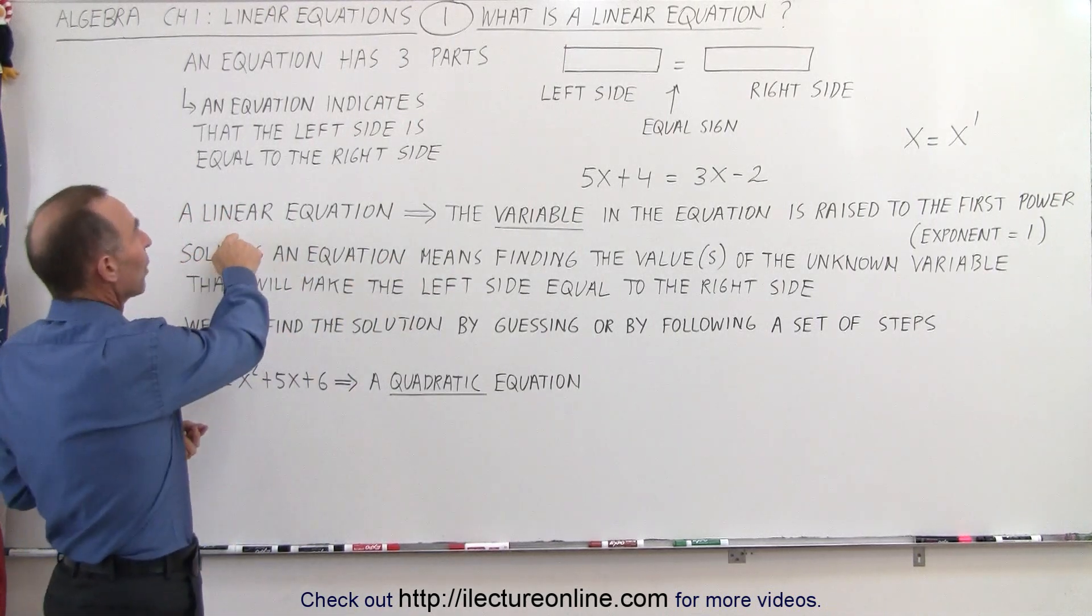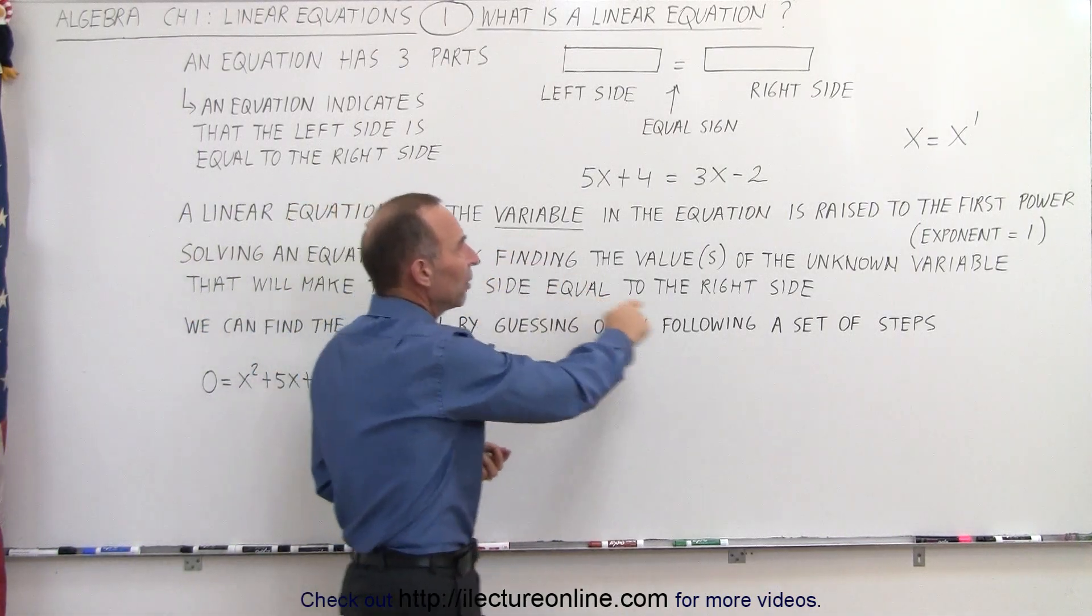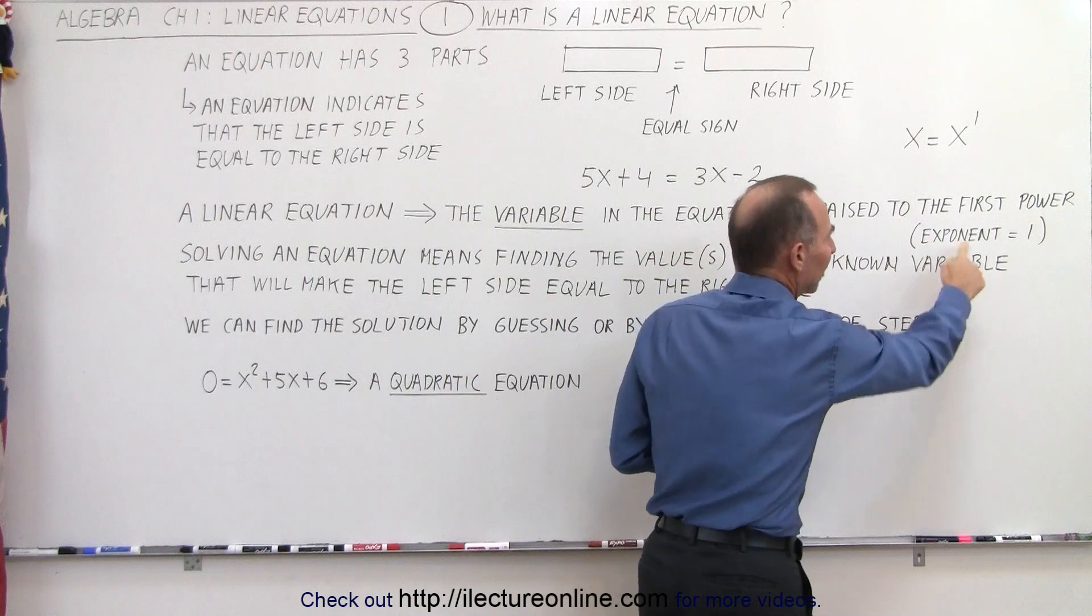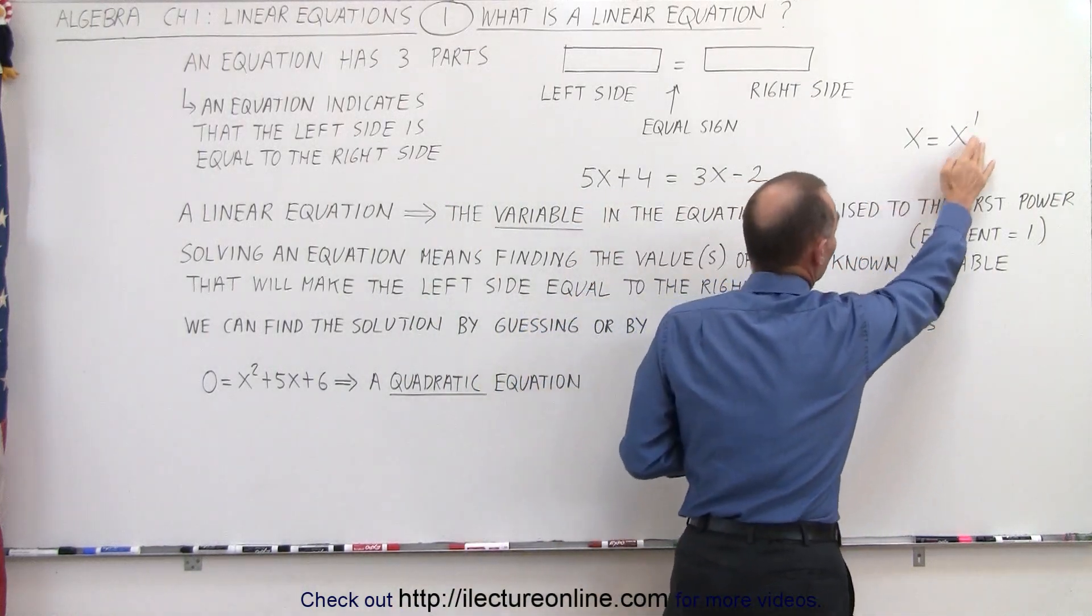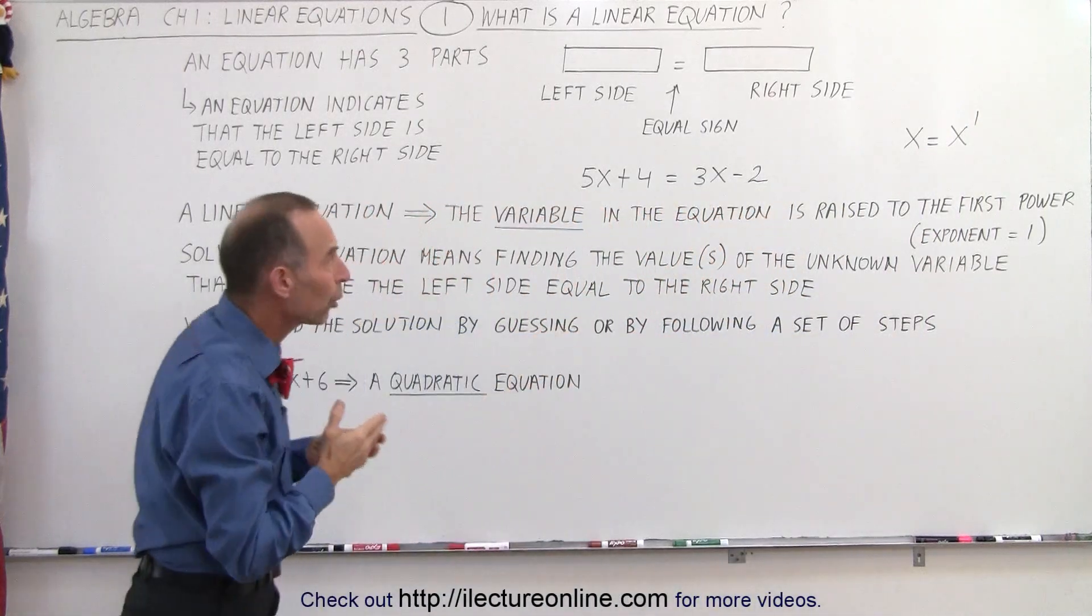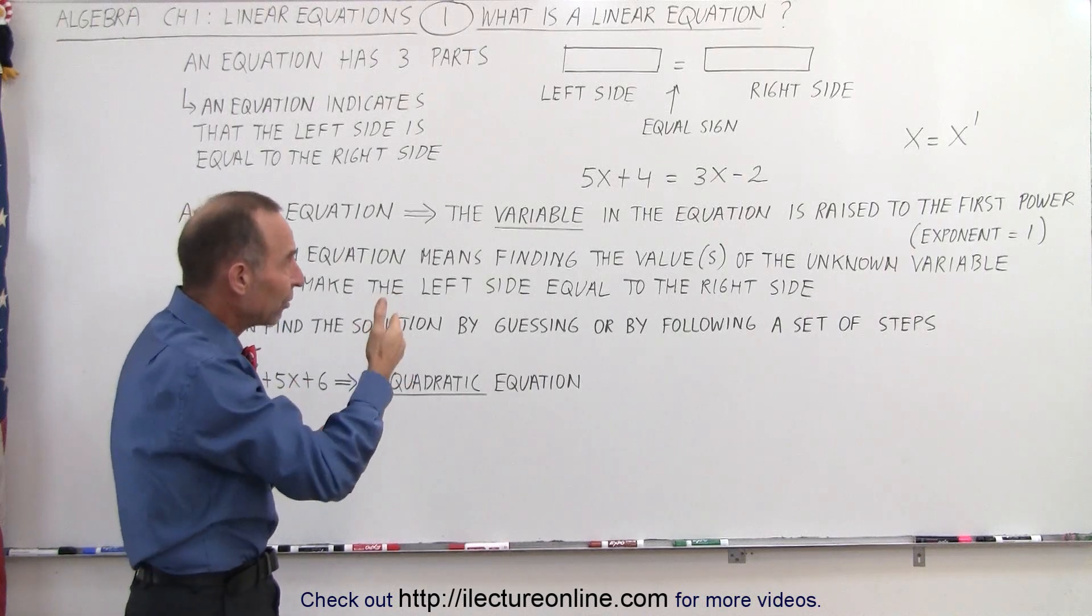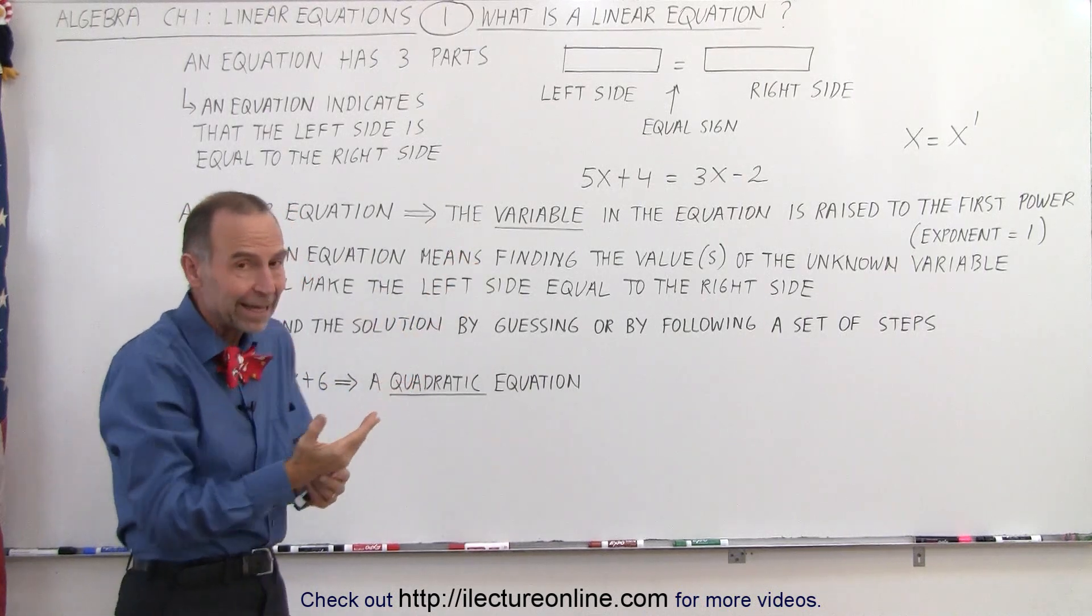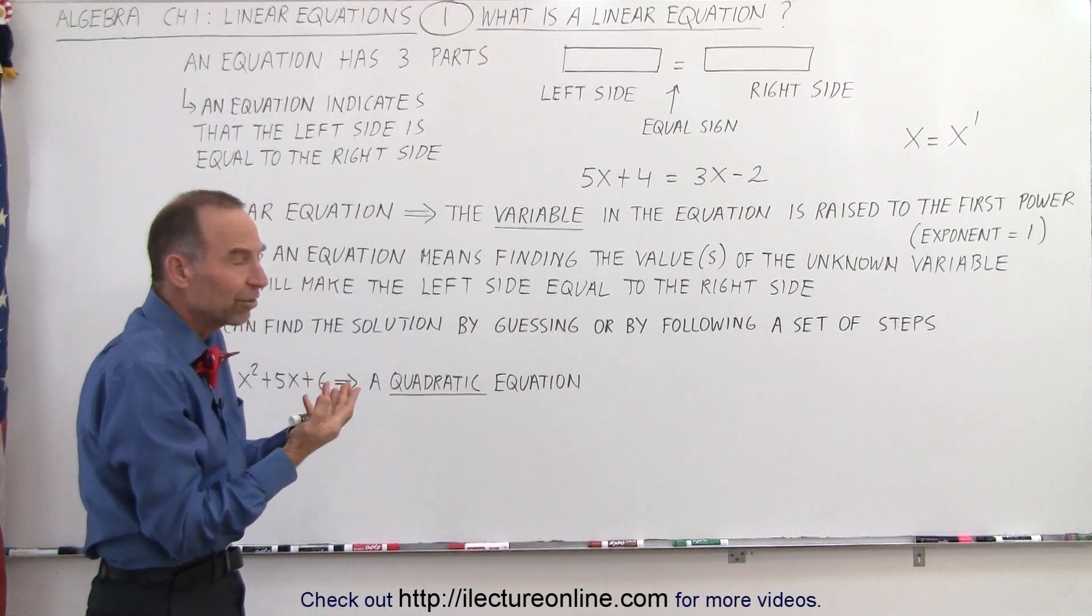Now, a linear equation is an equation where the variable inside the equation is raised to the first power, exponent being equal to 1. When we write x, we mean x to the first power. So therefore, when every term in the equation either has a number or a variable raised to the first power, then we can say it's a linear equation.